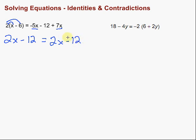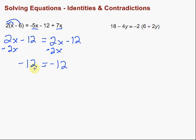Already you probably noticed it looks the same on both sides. Let's just continue on and see where we get. We subtract 2x from both sides, and all of a sudden we're left with nothing except negative 12 equals negative 12. Is negative 12 equal to negative 12? Yes — negative 12 is always equal to negative 12, so all numbers will work in this equation.